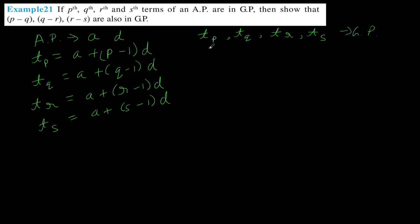When terms are in geometric progression, the ratios are fixed. That is, TQ divided by TP should be equal to TR divided by TQ, and similarly TR divided by TQ should equal TS divided by TR. Let's make use of the first fact that TQ by TP must equal TR by TQ.